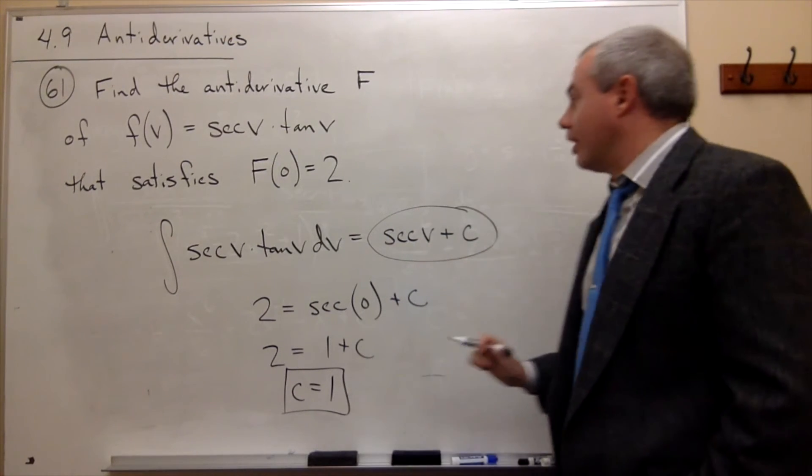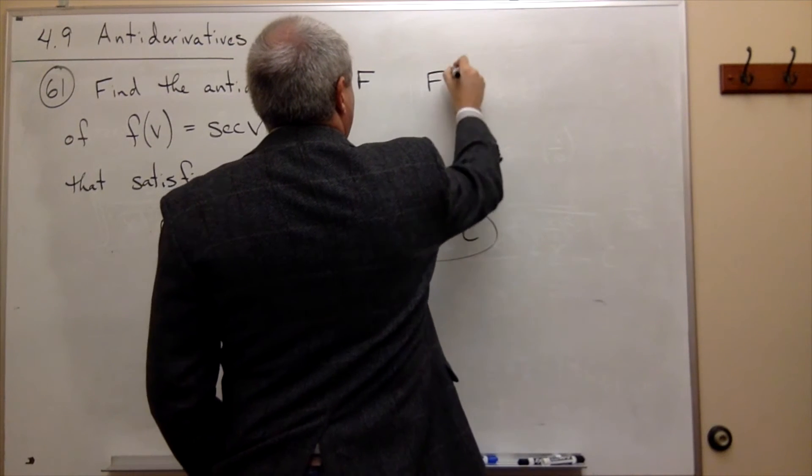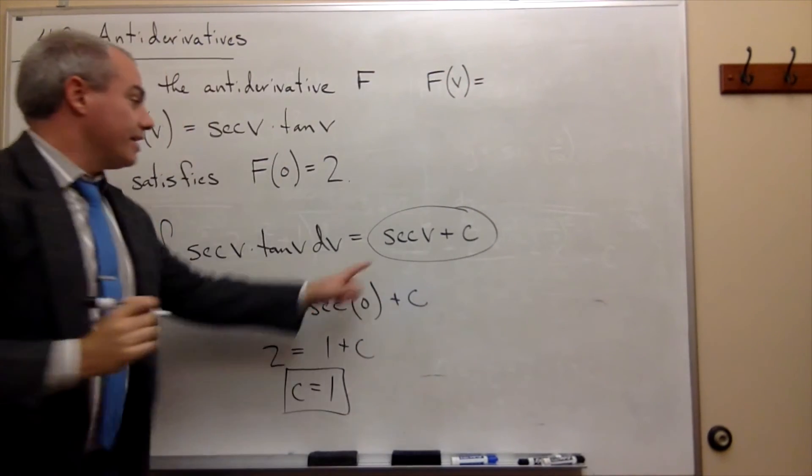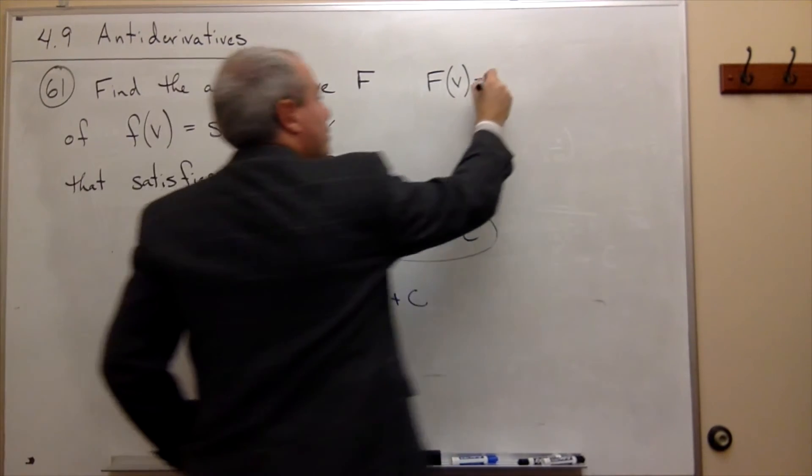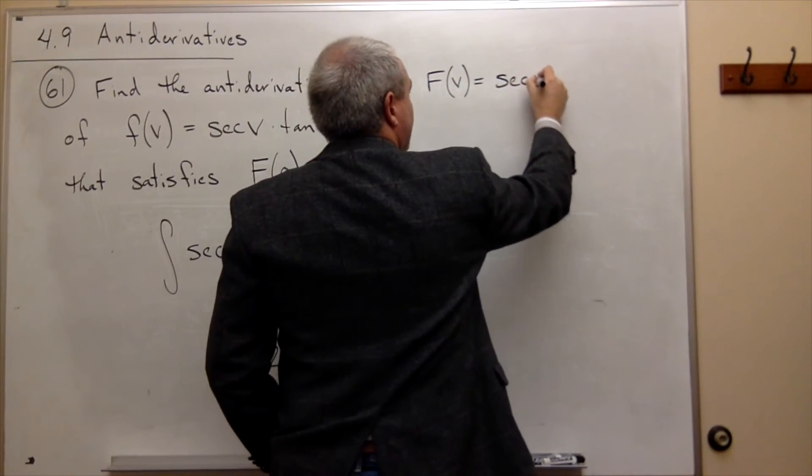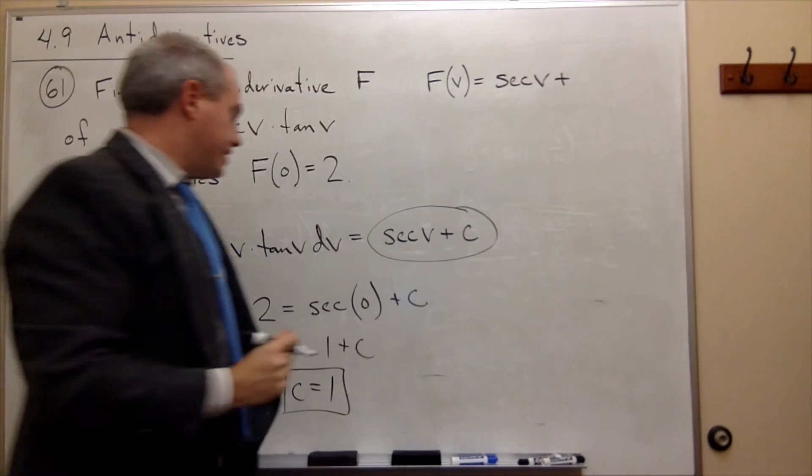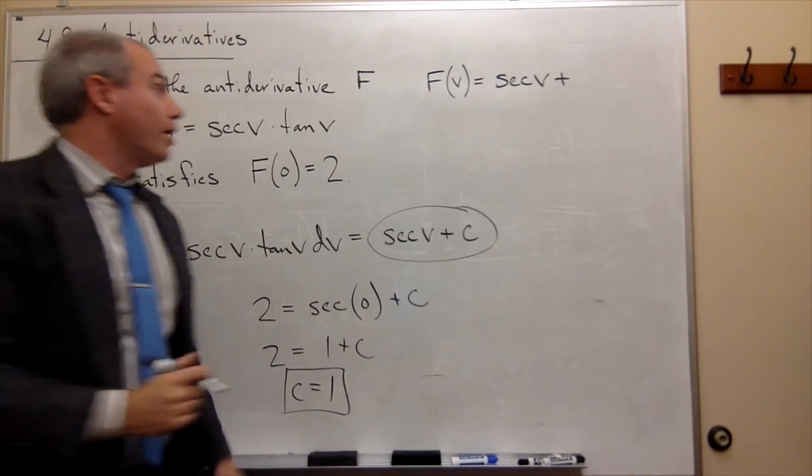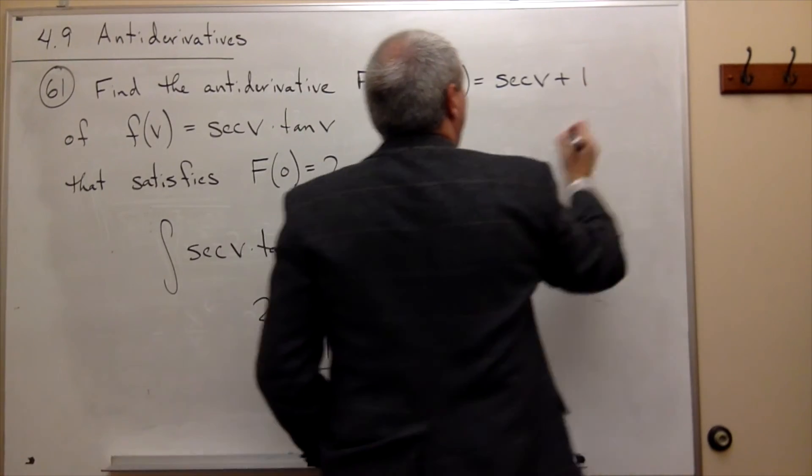C is 1. So what I get is that F(v), the one I'm looking for, is sec v plus the particular C that gets the job done. So C was 1, which means plus 1.